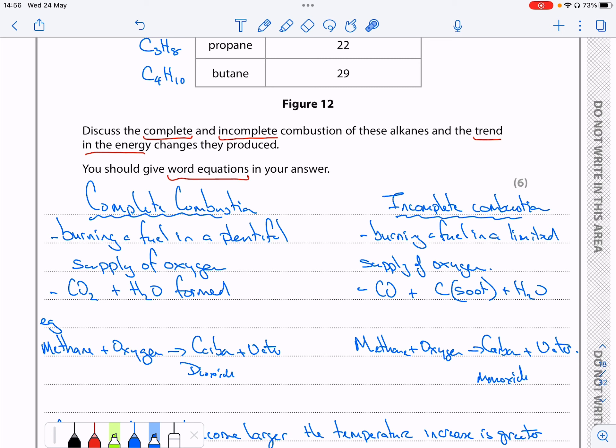Incomplete combustion is when we burn the fuel in a limited supply of oxygen and that leads to the formation of carbon monoxide and/or carbon which is soot, and also water. Word equation: methane plus oxygen is carbon dioxide and water.